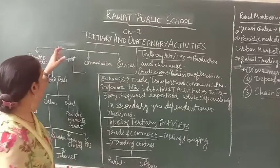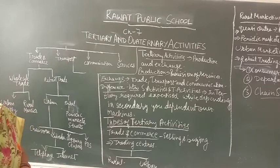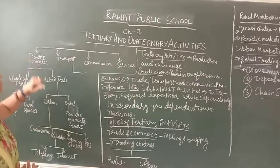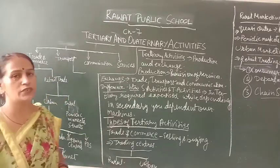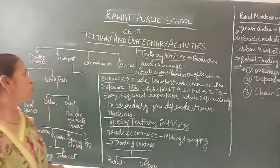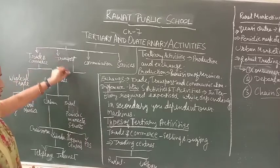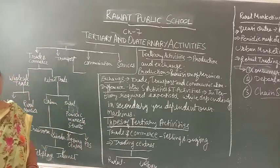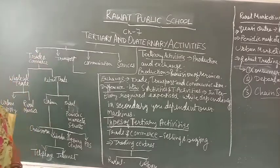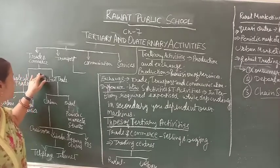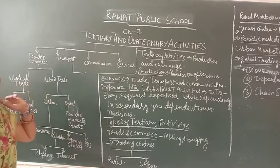Now we are going to look at tertiary activities and divide them. The first division is trade and commerce, second is transport, third is communication, and fourth is services. In today's class, we are going to define only trade and commerce. We will divide trade and commerce into two parts: wholesale trade and retail trade.